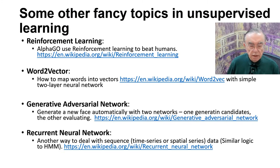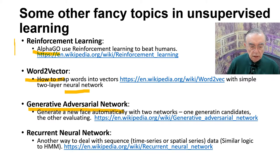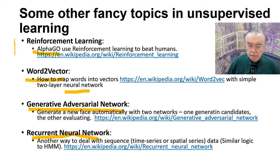Here are a few other examples. Reinforcement learning was famous because it was used by AlphaGo. You need to map words into vectors of associated words with a neural net. We have generative adversarial networks, where you have two networks — one generating candidates, the other evaluating. And then there's a variant of a neural net optimized to do time sequences, called a recurrent neural net. All of these are very important statistical methods which we have not discussed.